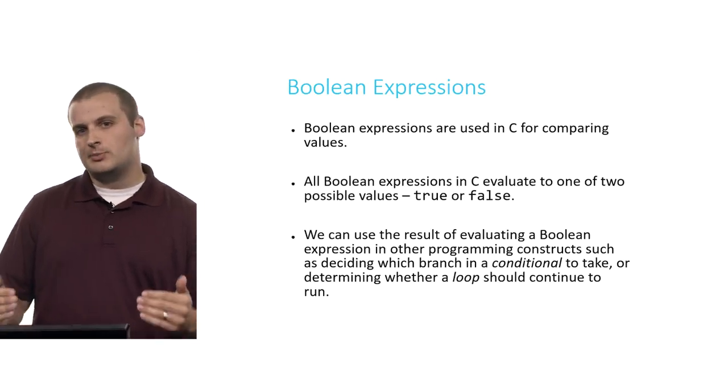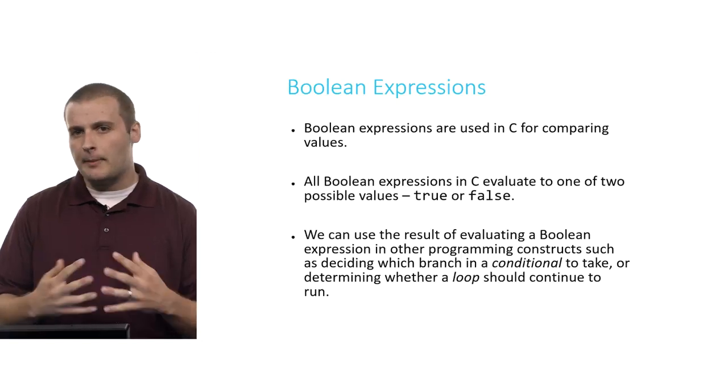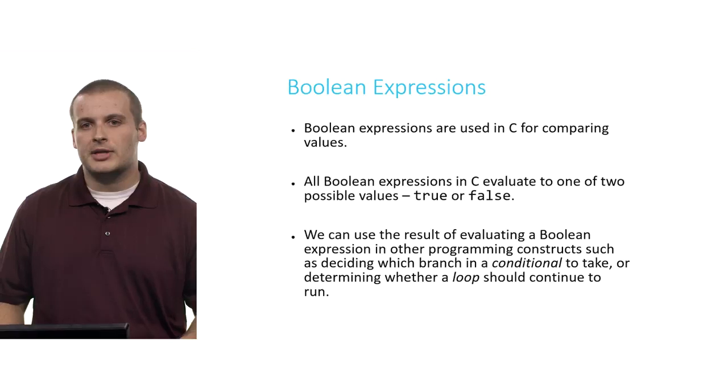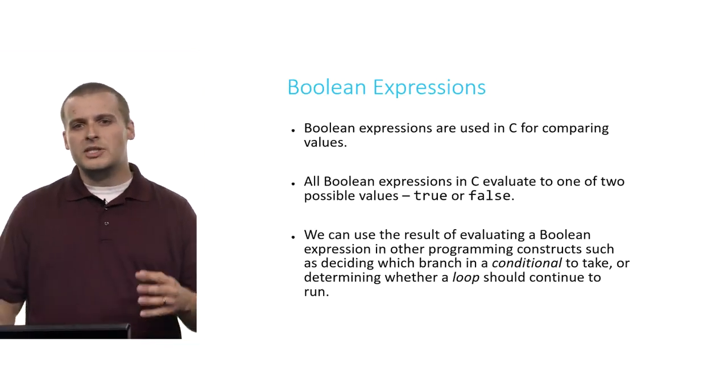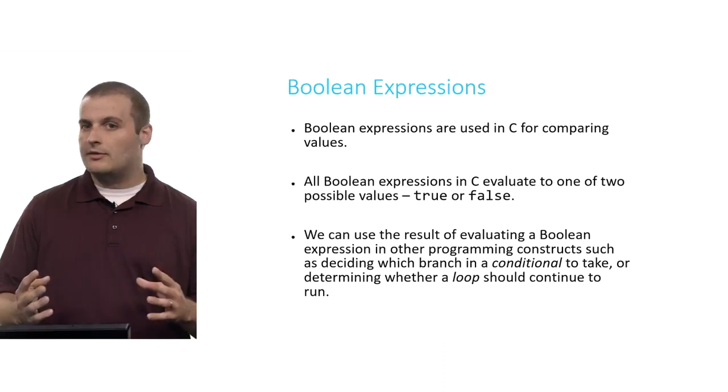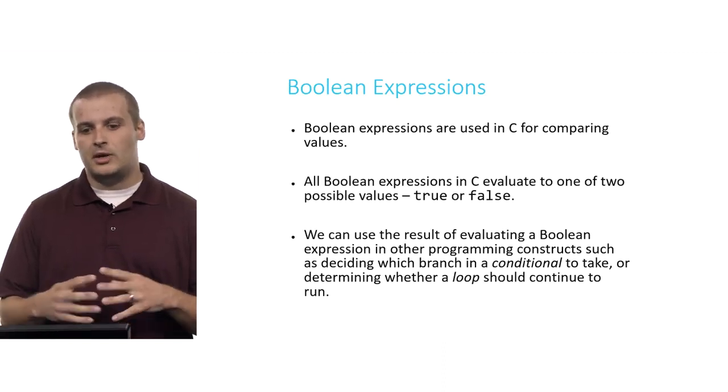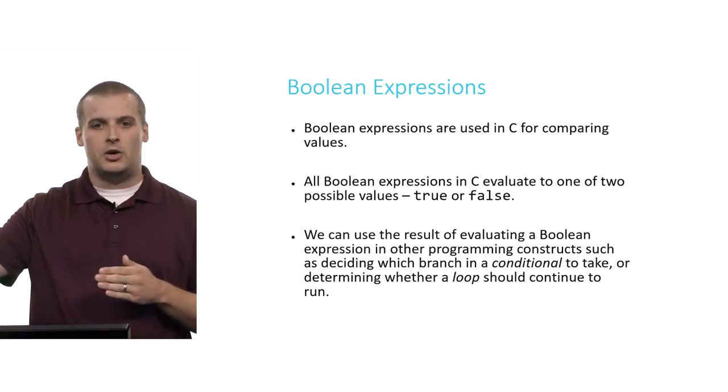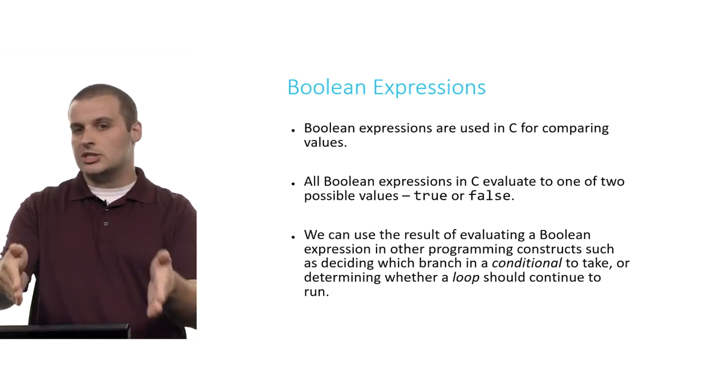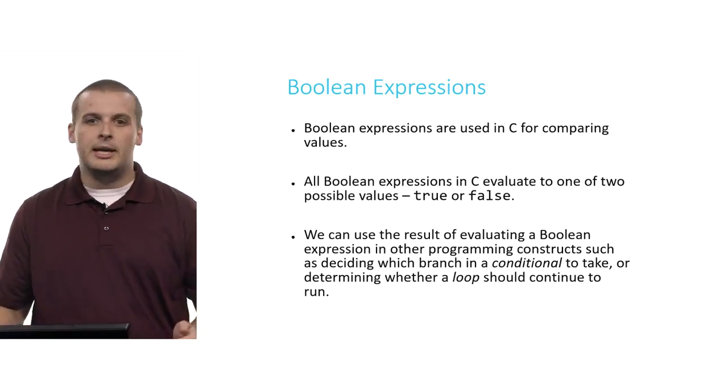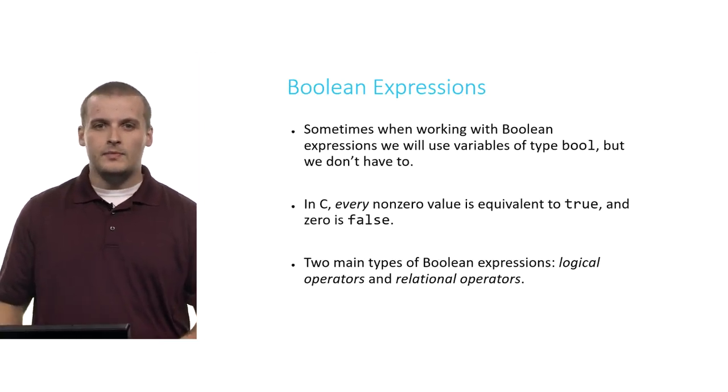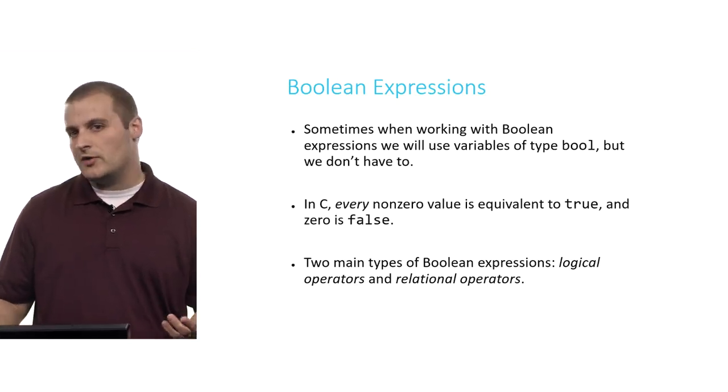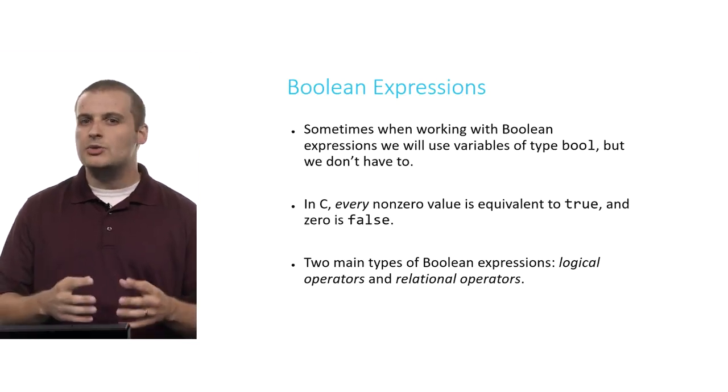Let's switch gears for a second and talk about Boolean expressions, which also fall into the overall category of operators. Boolean expressions, unlike arithmetic operators, are used for comparing values. All Boolean expressions in C evaluate to one of two possible values: true or false. That's the only two values a Boolean variable can take on. We can use the results of Boolean expression in a lot of ways in programming. In fact, you'll be doing this quite a lot. For example, we might decide, if some condition is true, maybe I'll take this branch down my code, a conditional. Or maybe as long as this is true, I want to keep doing this over and over, a loop. In both cases, know that we're using a Boolean expression, a true or false, to decide whether or not to take a particular path.